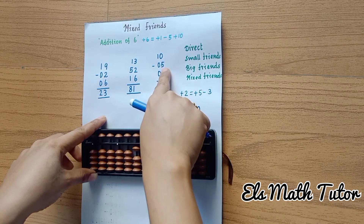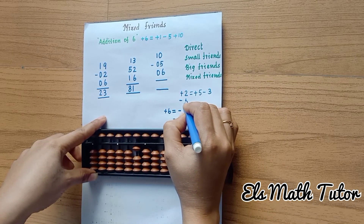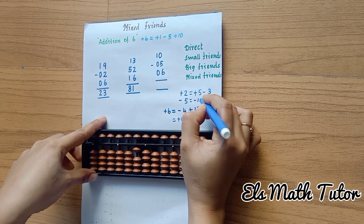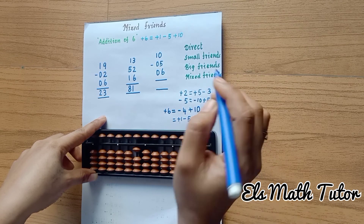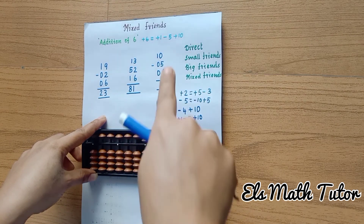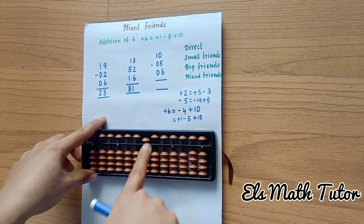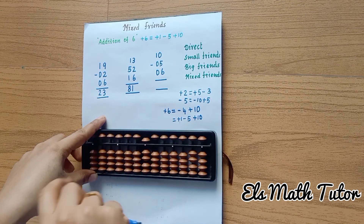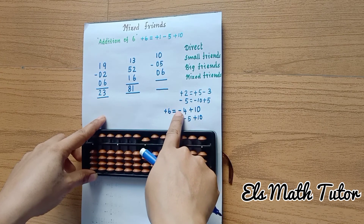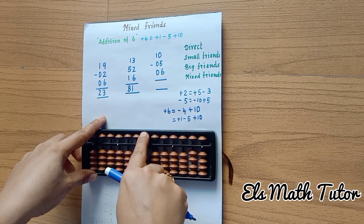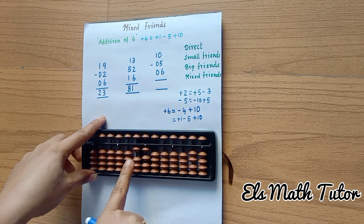Now the third sum. Minus five: common friend, we should subtract — the best friend is plus five, so minus ten plus five. Then six: what is the six formula? Minus four plus ten. Here also we are not able to do minus four, so we take the mixed difference formula — instead of minus four we take the small friends formula: plus one minus five, then plus ten. What is the answer? Here ten, here one — so that is eleven.